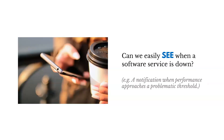Here's another example. Let's say we're a tech company. Can we easily see when a software service is down? Do we know that there's a problem? Is a notification sent when performance approaches a problematic threshold — an email, a text message, or something like that — so we know we've got to fix the issue? These visual cues help us understand the process and address issues.